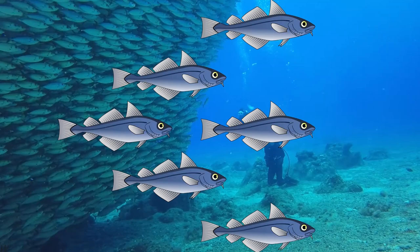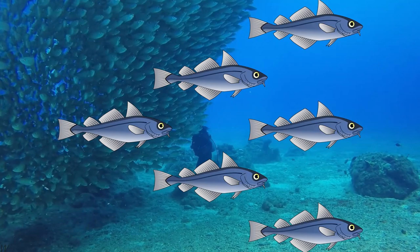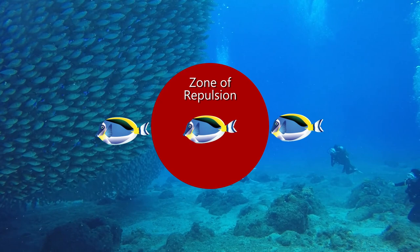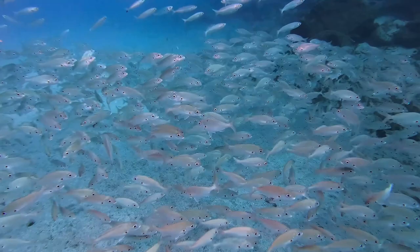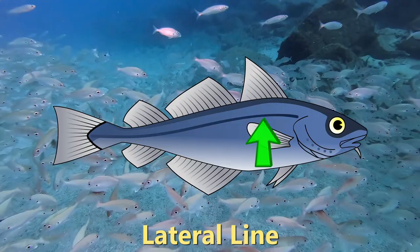This is possible because each fish maintains a so-called zone of repulsion with its neighbors, where fishes evade each other to avoid collisions. Then, outside of that area, there is a zone of orientation where each fish tries to match its neighbors. The fishes do all that with a combination of visual perception and an organ alongside their body called the lateral line, which can sense extremely subtle pressure changes in the surrounding water. So if a neighboring fish speeds up or turns, it can be felt through that organ.